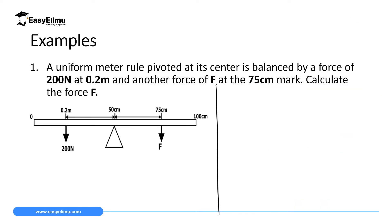We can now handle a question on the principle of moments. A uniform meter rule balanced at its center is balanced by a force of 200 newtons at a distance of 0.2 meters, and another force F is applied at the 75 centimeter mark. The distance from the pivot for the 200 N force is 50 minus 20, which equals 30 cm, so d1 equals 0.3 meters.